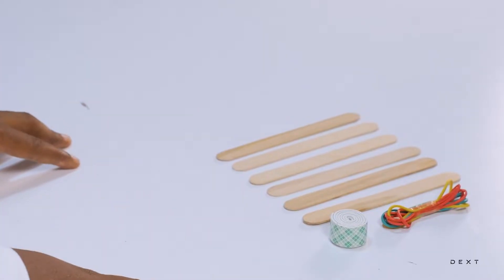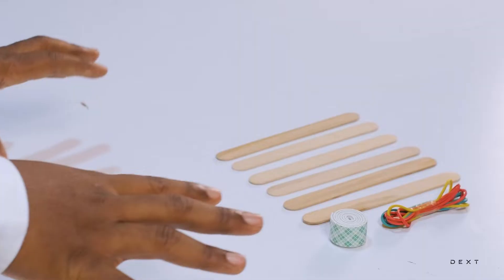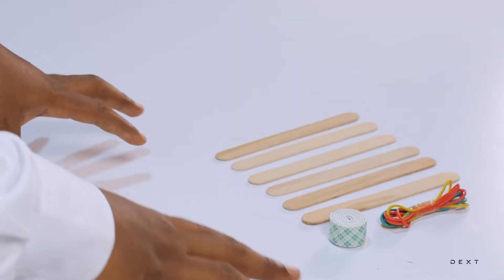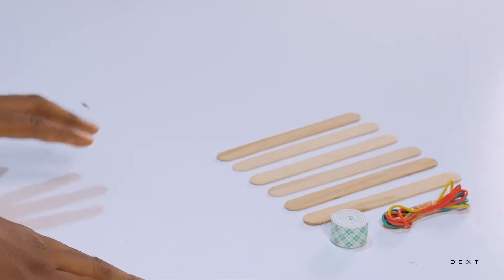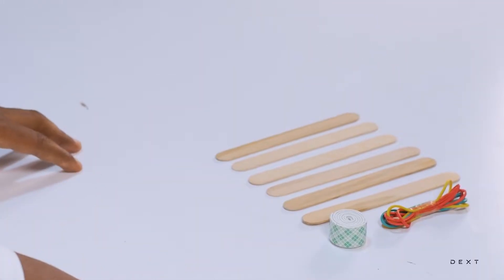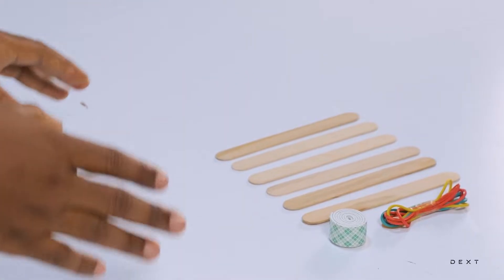So the device we are going to build is a simple catapult. Each student is going to build their own catapult and we are going to try to shoot some balls of paper to a destination. Now, how are we going to build the catapult?